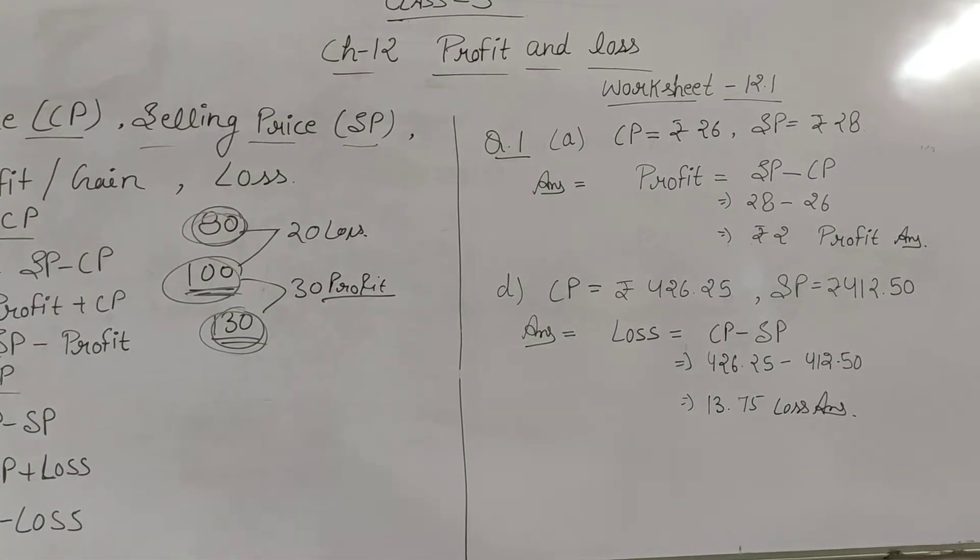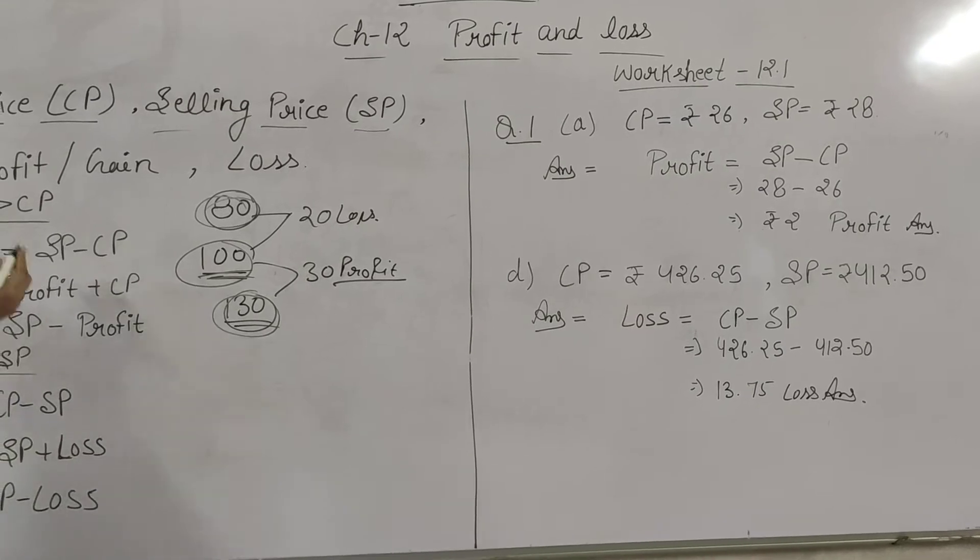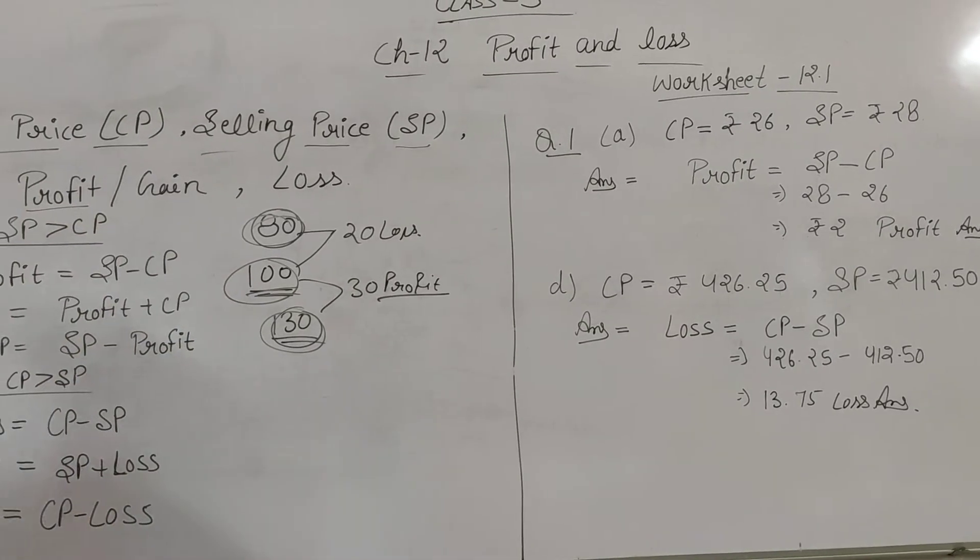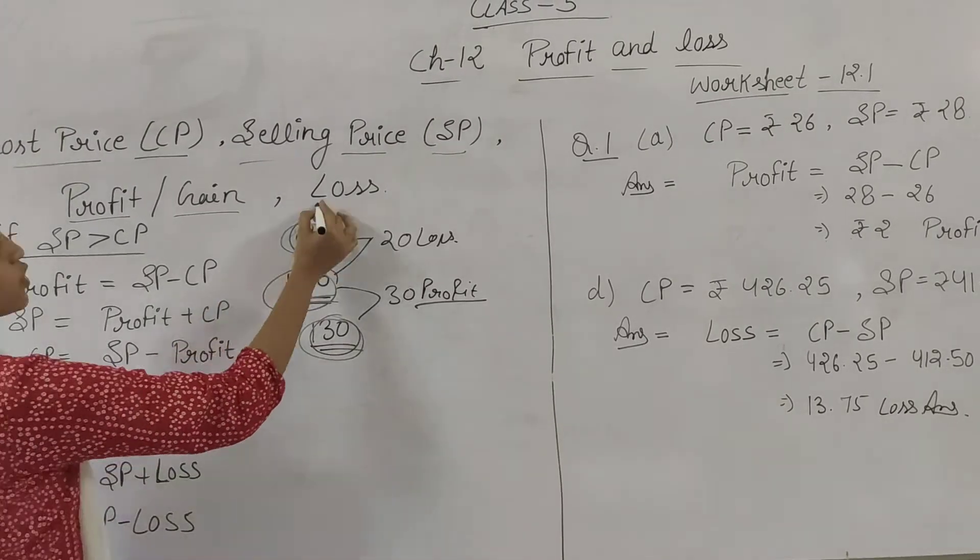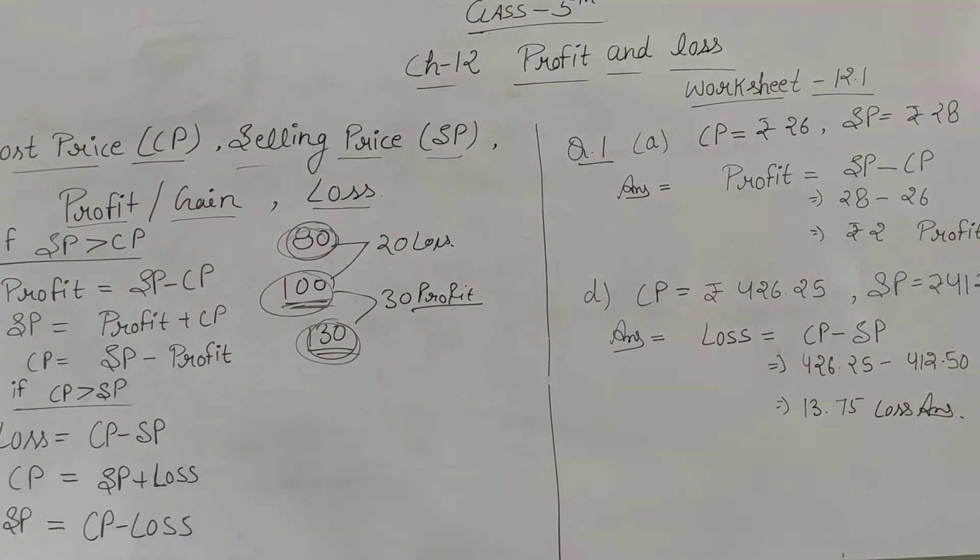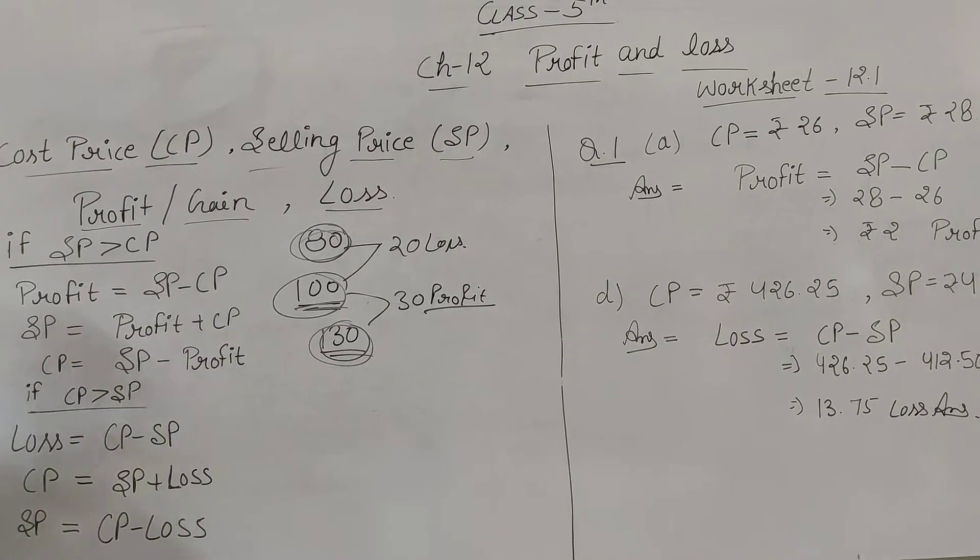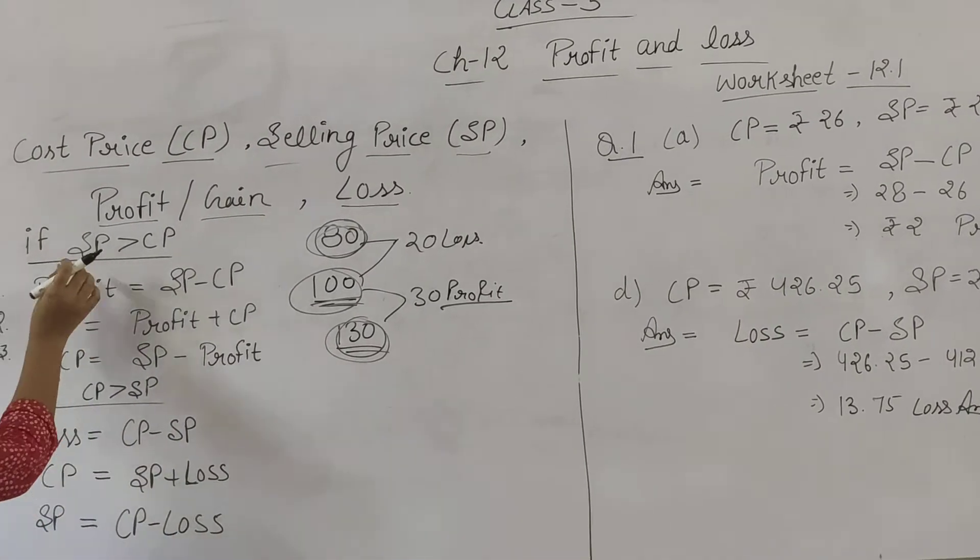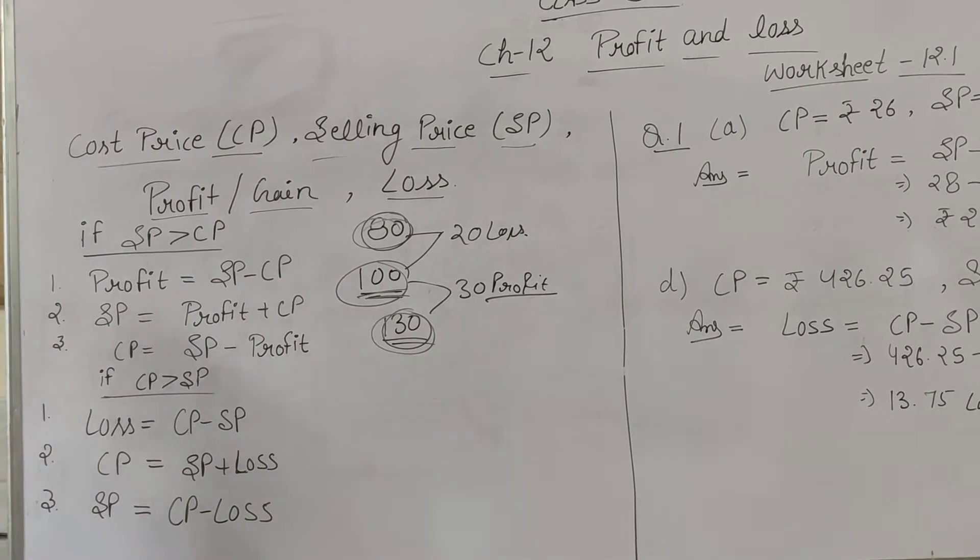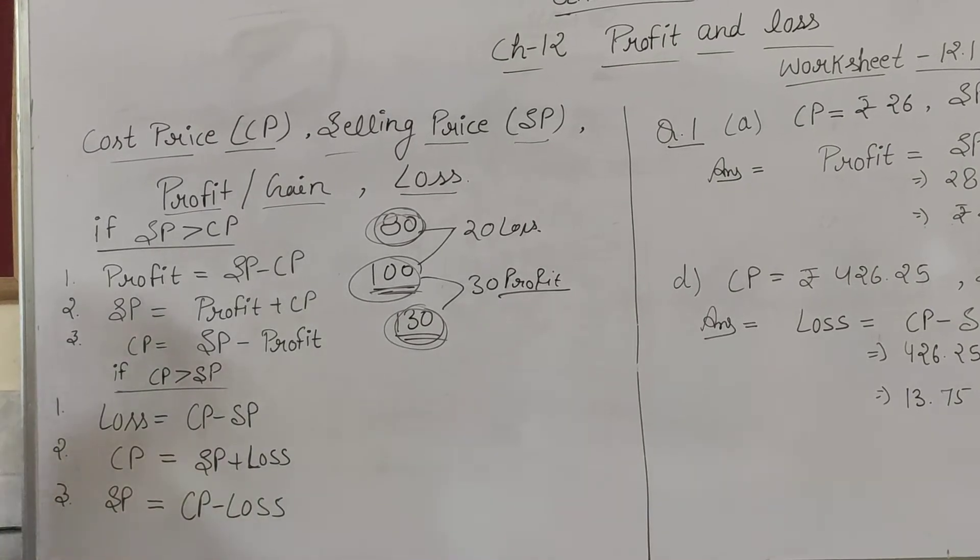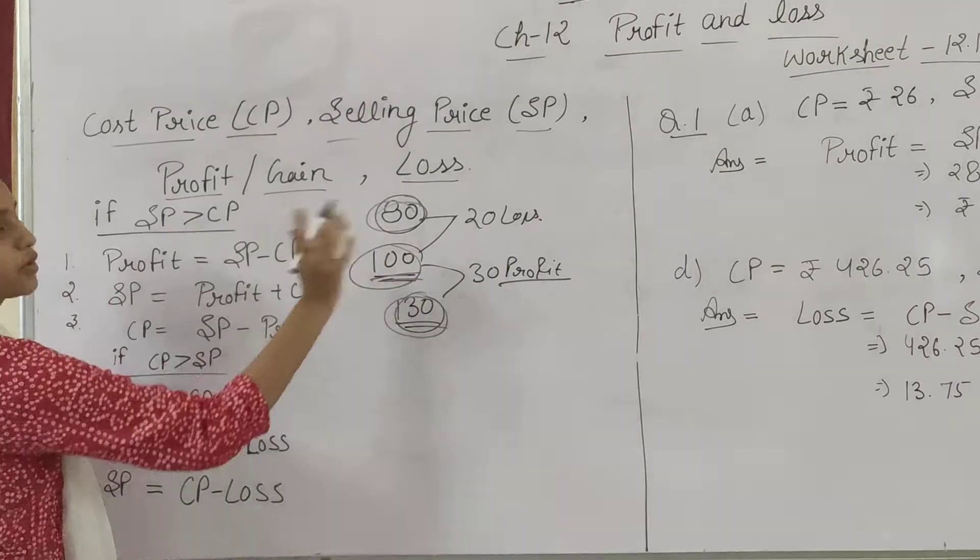After buying, if you sell for more than the cost, then you make a profit or gain. If you sell for less than the cost, then you incur a loss. We have two conditions to consider. If SP is more than CP, that means selling price is greater than cost price, then we have profit.